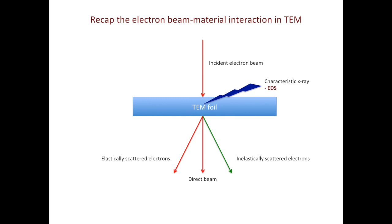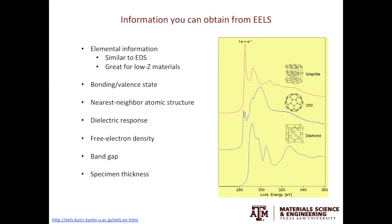If we analyze the energy loss of the inelastically scattered electrons, this gives us the results from EELS. From EDS, the information we can obtain is pretty straightforward — it tells us which elements are present in the material. From EELS, in addition to elemental information, we can learn a lot more about your material systems. The information that EELS spectra can offer includes elemental information, very similar to EDS.